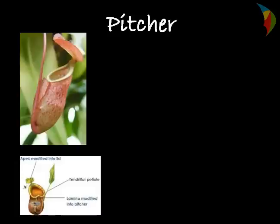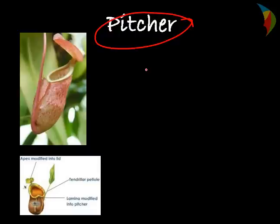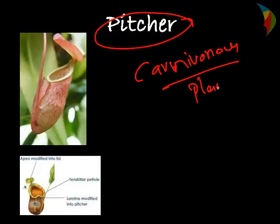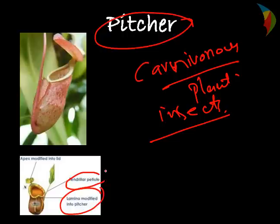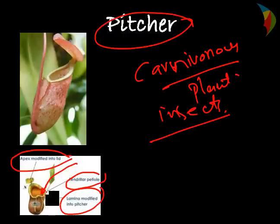Another very unique modification is pitcher leaves. Here the leaf is modified in the form of a pitcher. This is mostly found in carnivorous plants, where the plants consume insects as a nutritional requirement. The lamina is modified into a pitcher, and the apex is modified into a lid. When an insect gets in, the lid closes down and the insect is digested inside the pitcher and absorbed by the plant.